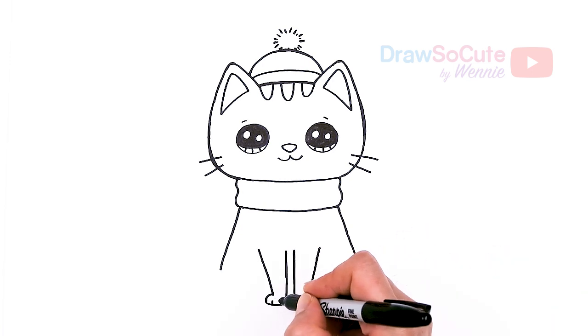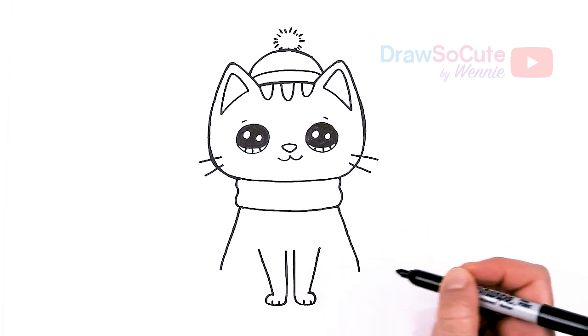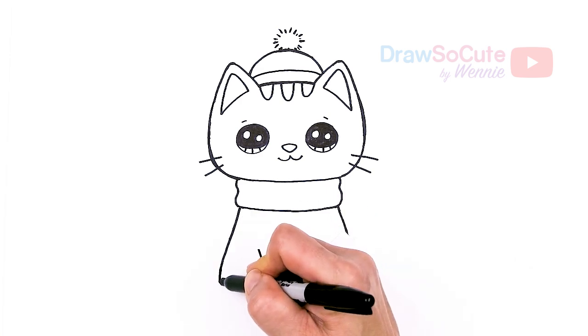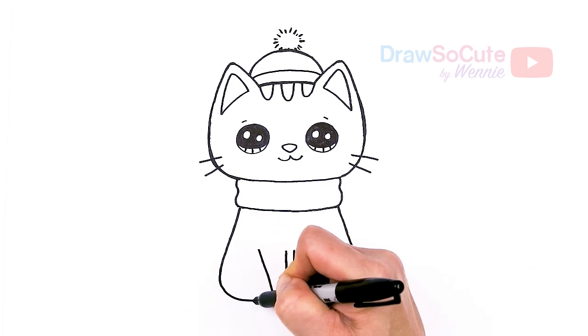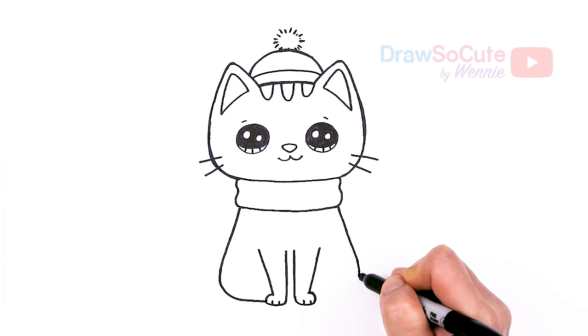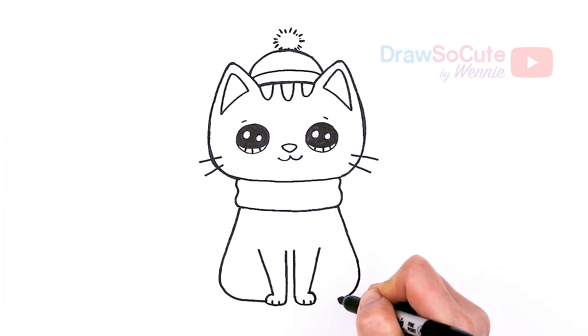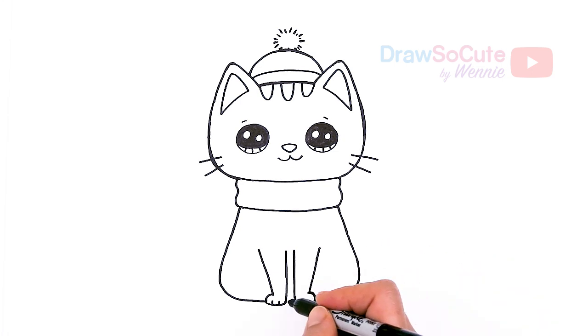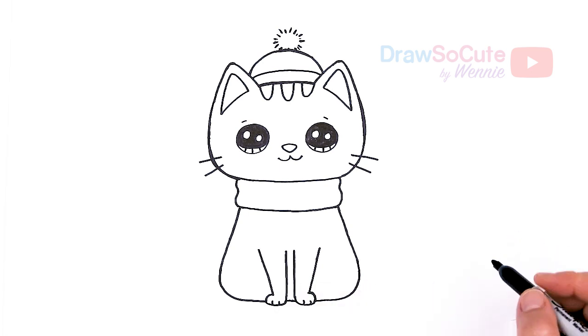Then come in here, two curves on both sides, and we're just going to bring this in. So curve it in and curve it in. And whatever space you have in between, just go ahead and draw a soft curve. There.